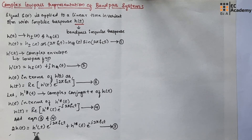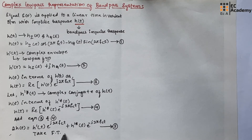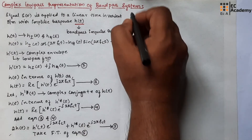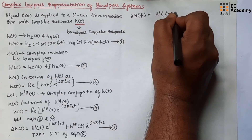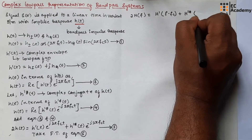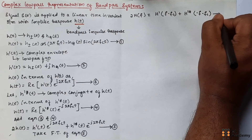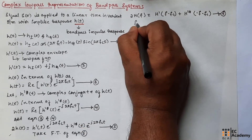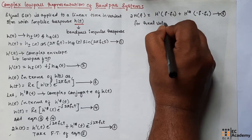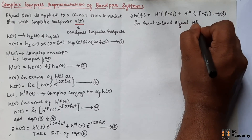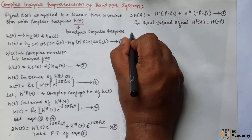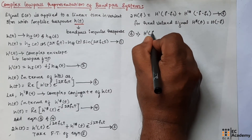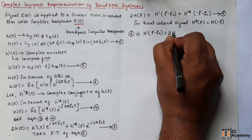Now let us take the Fourier transform of equation number 5. If we take the Fourier transform, we obtain: 2H(f) = H̃(f − fc) + H̃*(−f − fc). Let us call this equation number 6. Always remember that for a real-valued signal, H*(f) = H(−f).